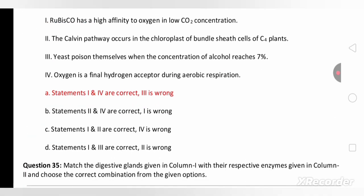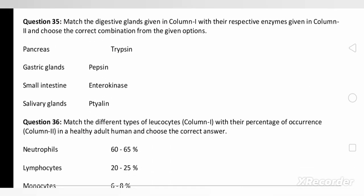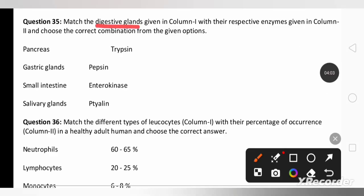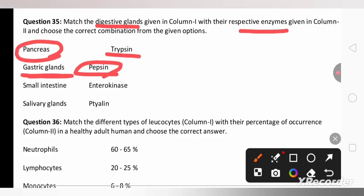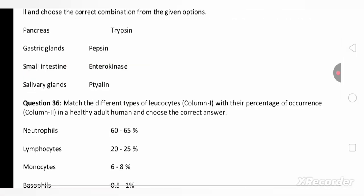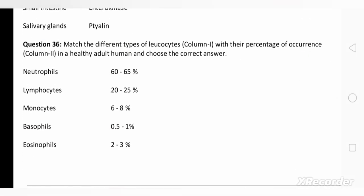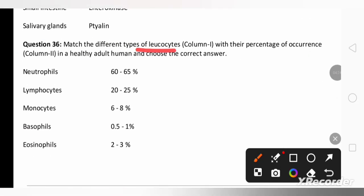Now here we need to match the digestive gland with their enzymes. I have already matched this: pancreas secretes trypsin, gastric gland in the stomach secretes pepsin, both help in protein digestion, small intestine secretes enterokinase, salivary gland secretes salivary amylase or ptyalin. Another question also matching relation: match the leukocytes in column 1 with their percentage in the human body. I have already matched: neutrophils 60 to 65, lymphocytes 20 to 25, monocytes 6 to 8 percent, basophils 0.5 to 1 and eosinophils 2 to 3 percent.